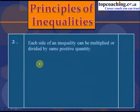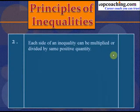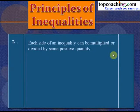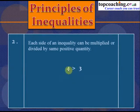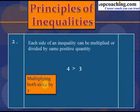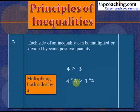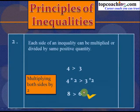The next principle: each side of an inequality can be multiplied or divided by the same positive quantity. The important point is that we are multiplying or dividing by a positive quantity — it should not be negative. For example, multiplying 4 > 3 by 2 gives 4×2 > 3×2, which is 8 > 6, and that is true.